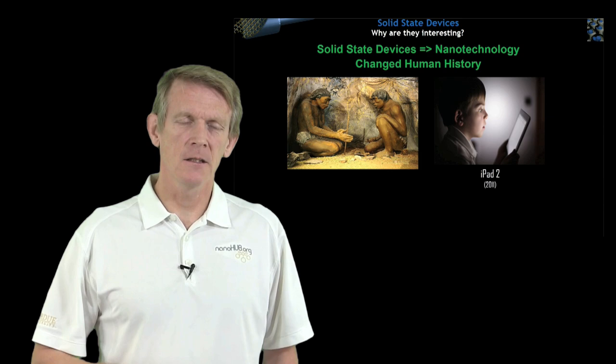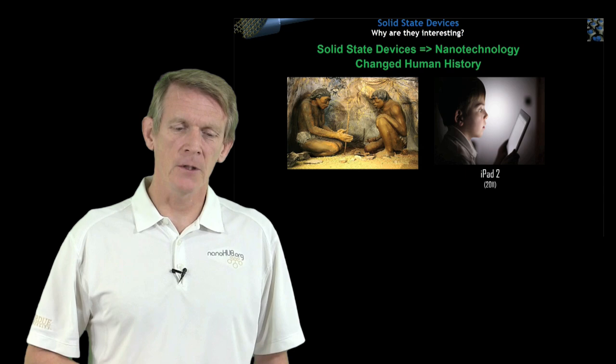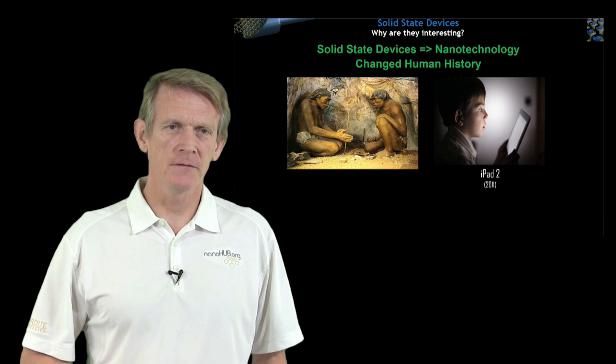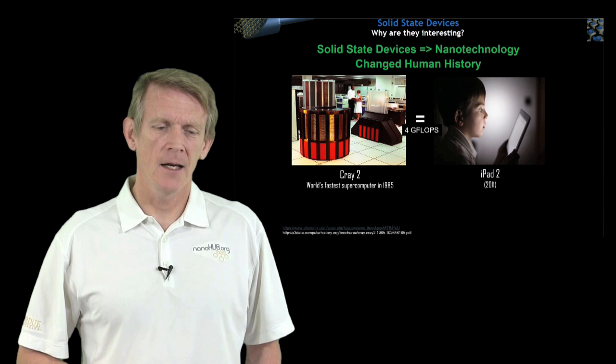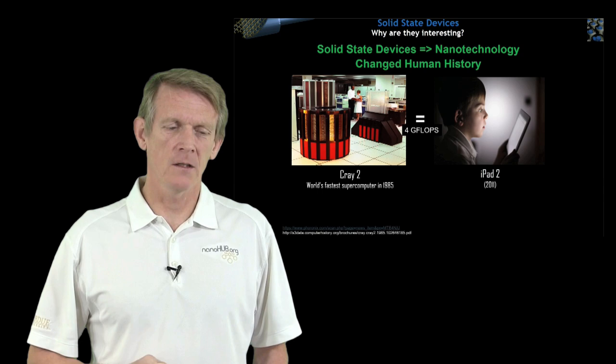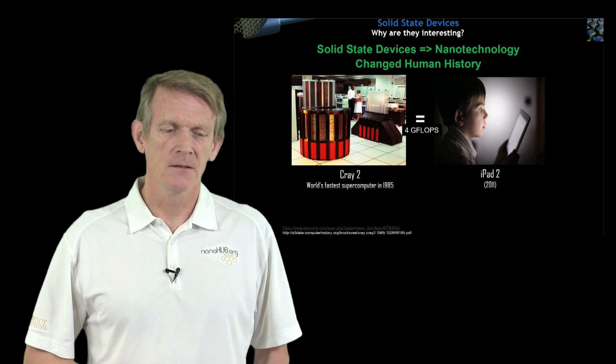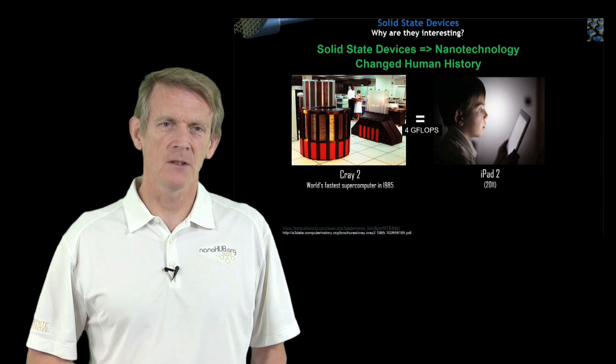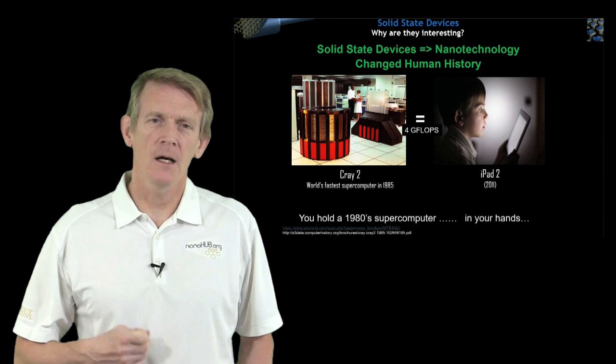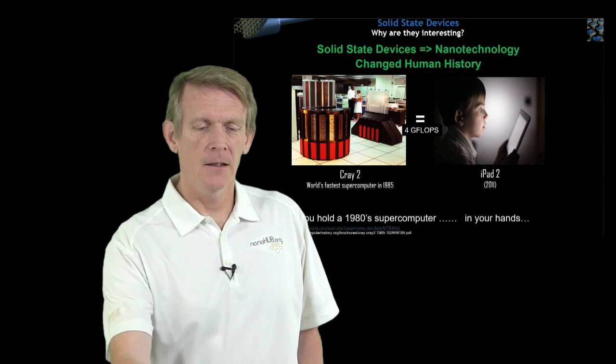I would like to compare a child here looking at a tablet computer, an iPad. This is a pretty old device by now, and it's still very powerful. I'd like to compare that to a Cray 2 from 1985. At that time, that was the world's fastest supercomputer. Those two deliver four gigaflops of operations, 4 times 10 to the 9 operations per second. That means you have in your hands a supercomputer from the 1980s.